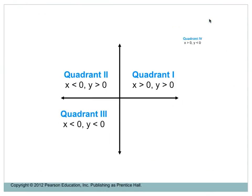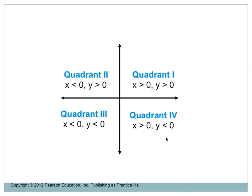The quadrants are named 1 through 4. A way to remember the order is to draw the letter C within your coordinate system — it goes 1, 2, 3, 4. It's a nice way to be able to talk about where a point is or where something is increasing or decreasing.